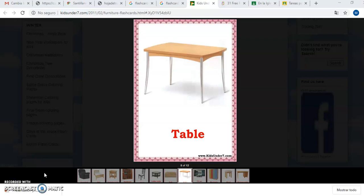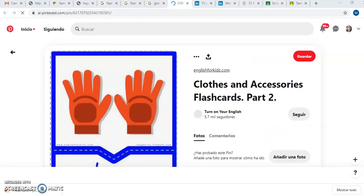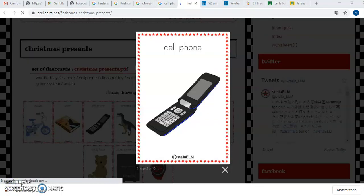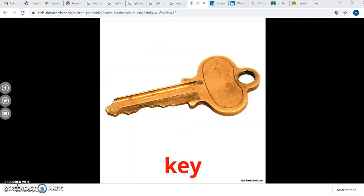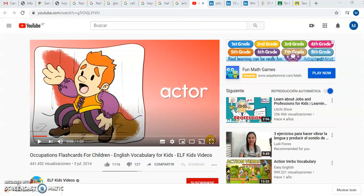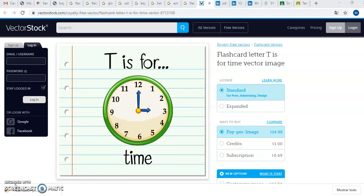Okay, let's start with the vocabulary. Repeat after me, please. Table, close, house, cell phone, key, hat, actor, time.